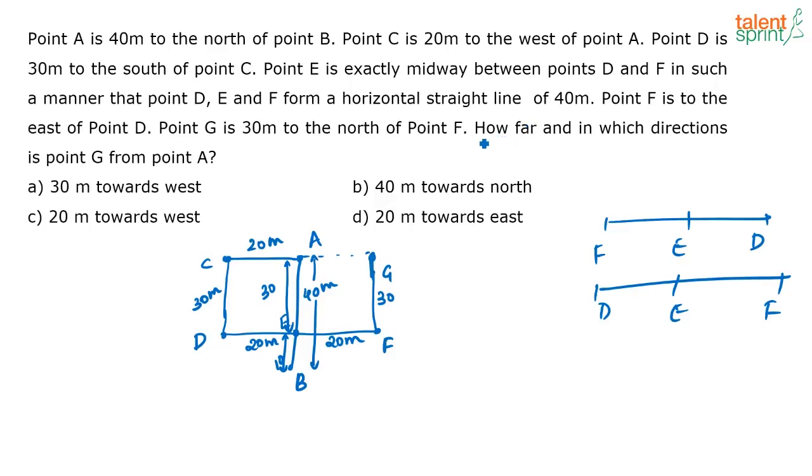Now the question is how far and in which direction is point G from point A. So when you look from point A, point G is towards the east. So it is how many meters towards the east of point A? 20 meters towards the east. Correct answer is option D. Yes 20 meters towards the east. Yes everybody got it correctly? See only thing is drawing this diagram once you get it correctly. It is very easy.